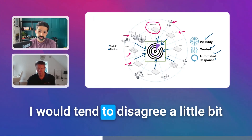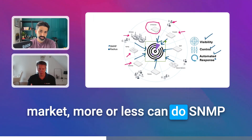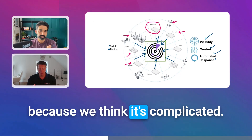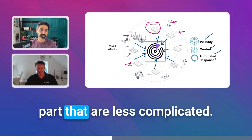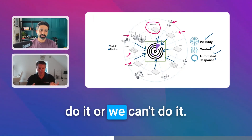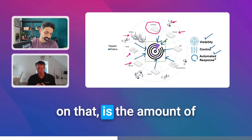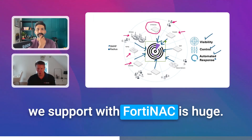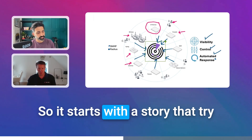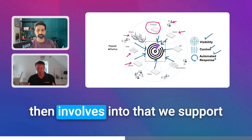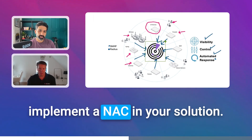All top five vendors in the NAC market can more or less do SNMP and RADIUS. The key difference is flexibility and where you start — Fortinet likes to start with SNMP because it's less complicated. And one more thing: the amount of infrastructure components that FortiNAC supports is huge. Even older switches that don't do RADIUS can be used with FortiNAC. So it starts with a story of less complexity, but it evolves into supporting a big variety of vendors in the market, which makes it easier to implement NAC in your solution.